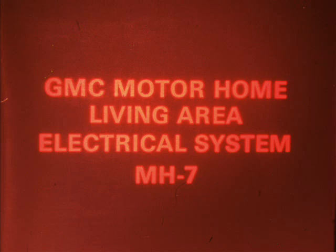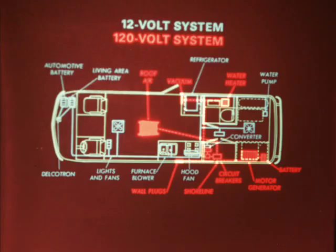GMC Motorhome Living Area Electrical System. The GMC Motorhome uses two types of electrical power: 120 volt alternating current and 12 volt direct current.